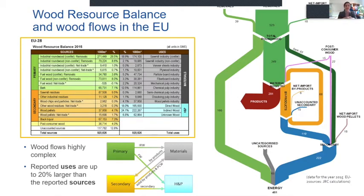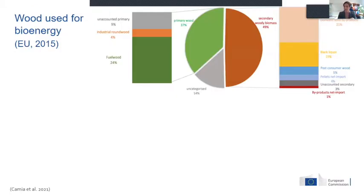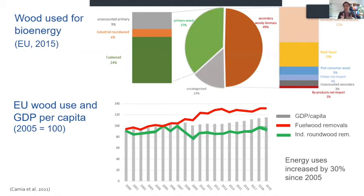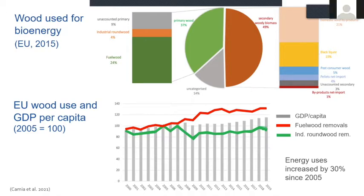We took a lot of data sources, switched them around, changed units, applied coefficients, and put everything together into one picture. We show a breakdown of wood use for bioenergy — about 14 percent is uncategorized due to the way reporting is set up. Industrial roundwood removals are roughly stable, while removals for fuel wood have always been on the rise and are less affected by market shocks.